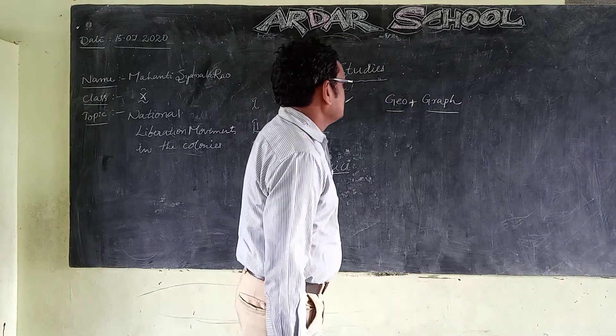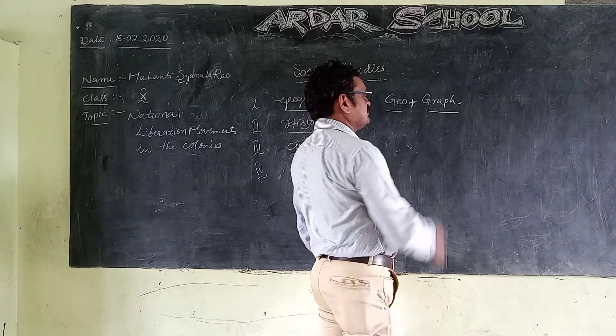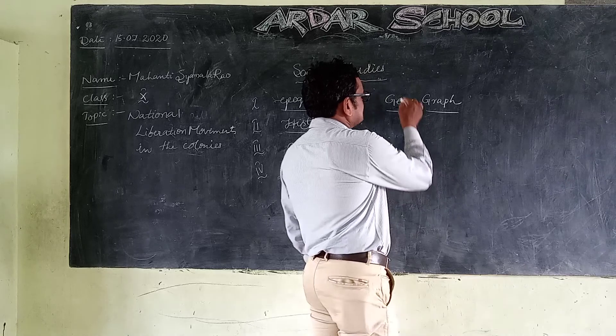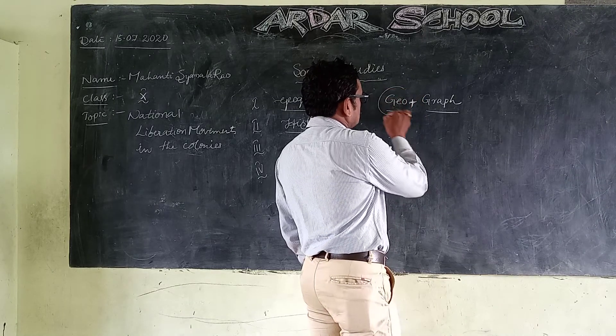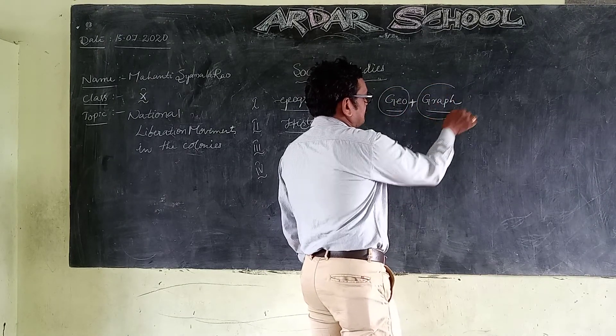Geography comes from two Greek words. One is 'Geo' and another is 'Graph.'